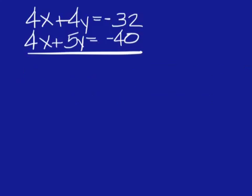Practice problem. 4x plus 4y equals negative 32. 4x plus 5y equals negative 40. Solve the system of equations.